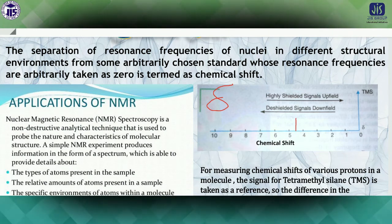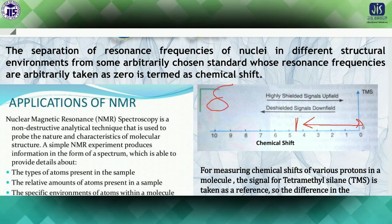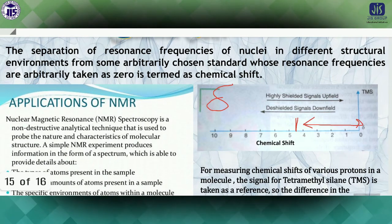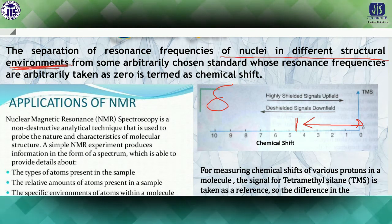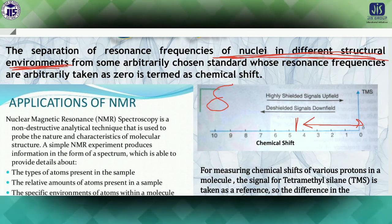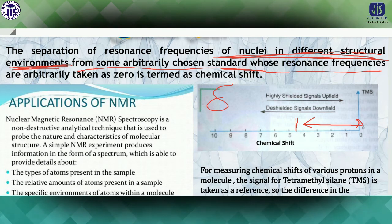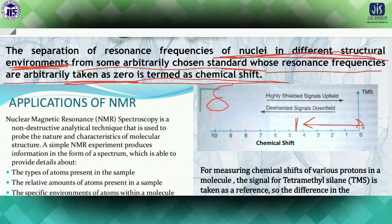The NMR value is expressed as delta (δ), which is the chemical shift. Chemical shift is defined as the separation of the resonance frequency of nuclei in different structural environments from an arbitrarily chosen standard. TMS — tetramethylsilane — is taken as the standard, whose resonance frequency is arbitrarily set to zero. This is very important for your exam.